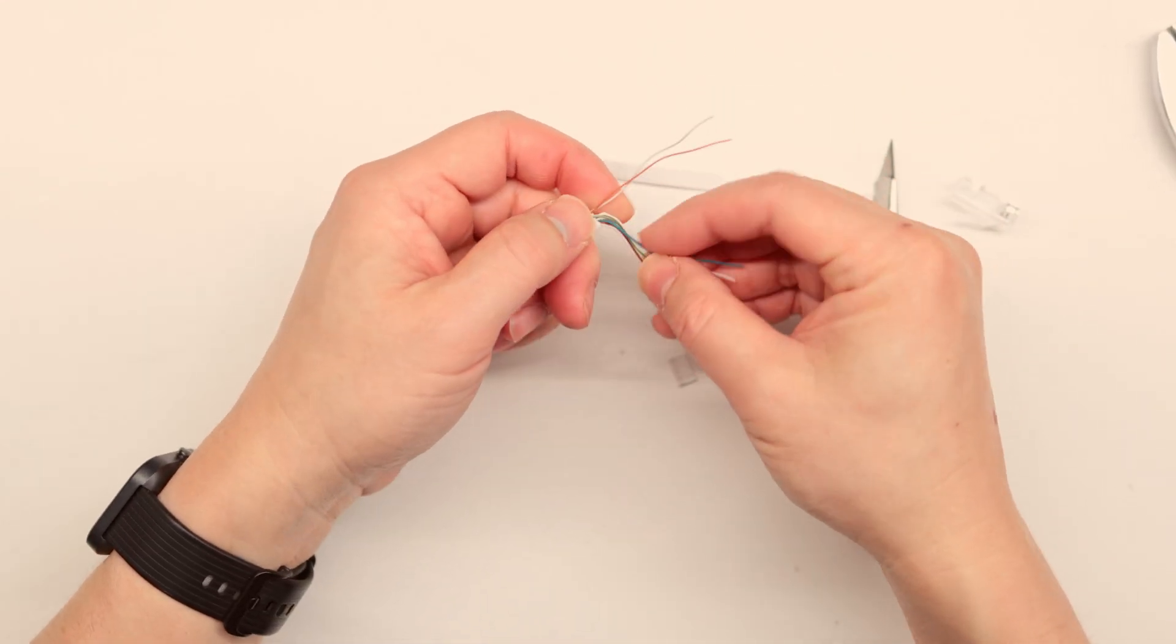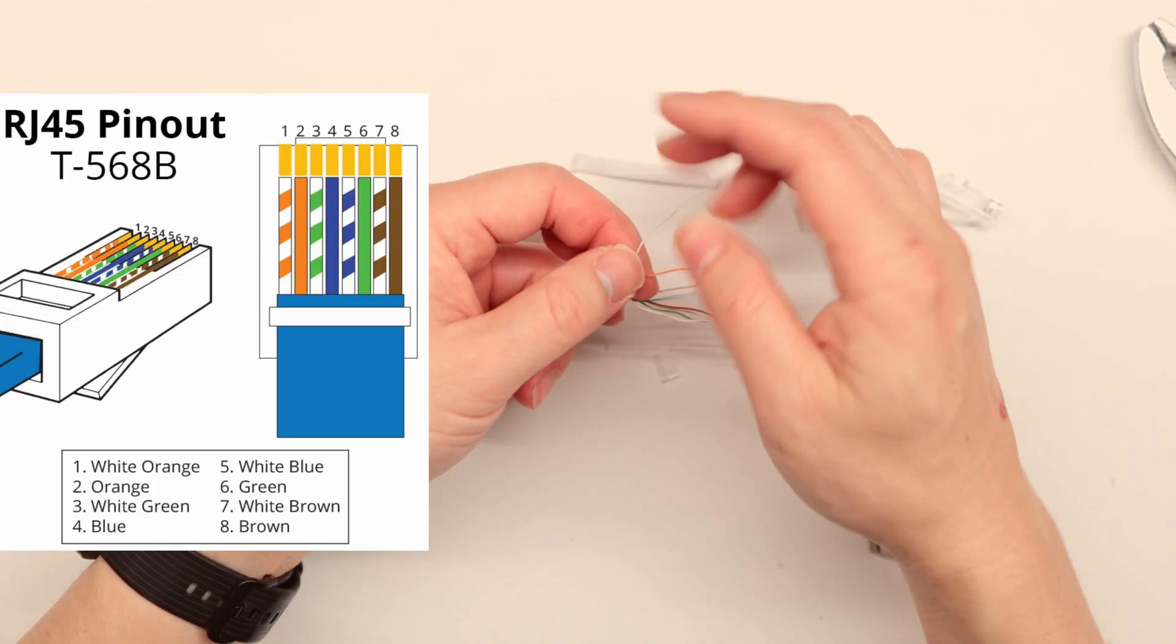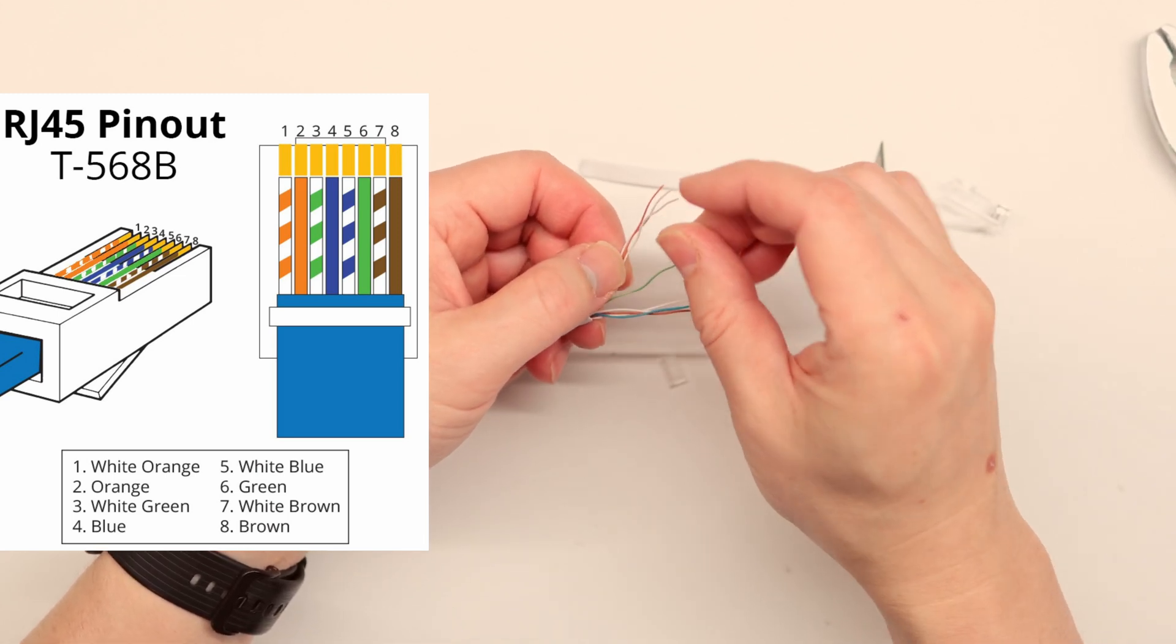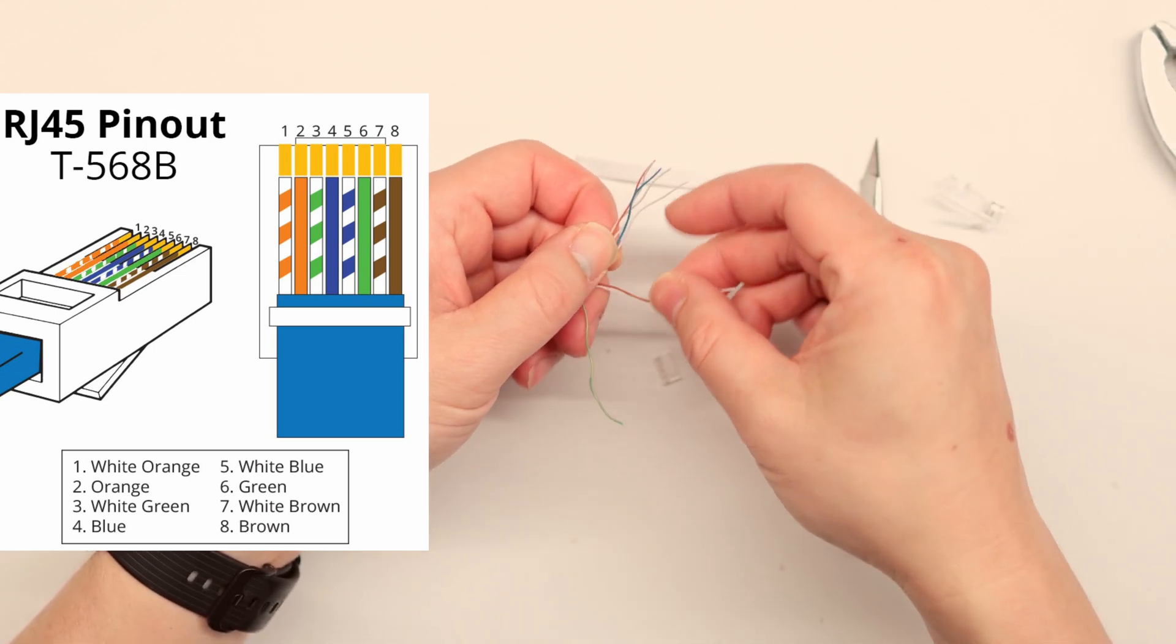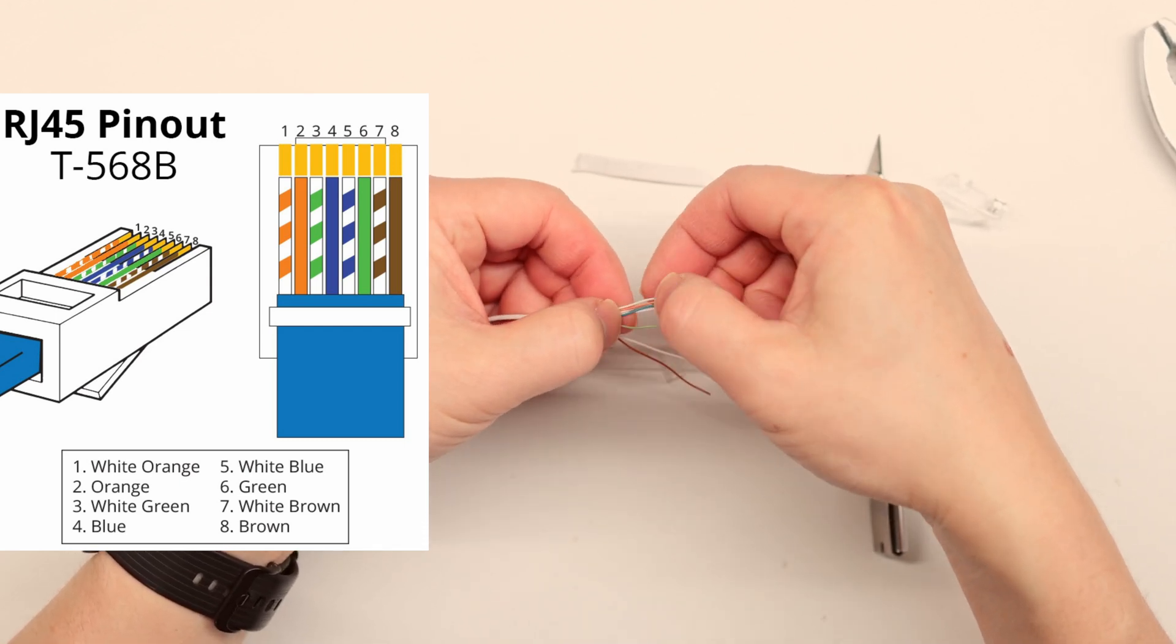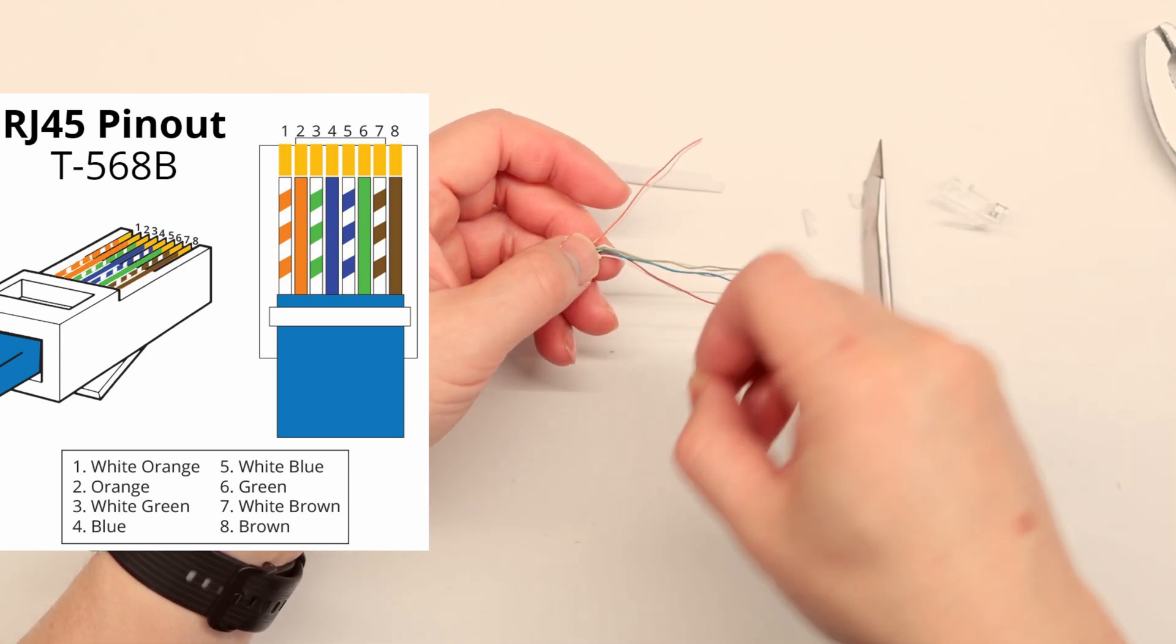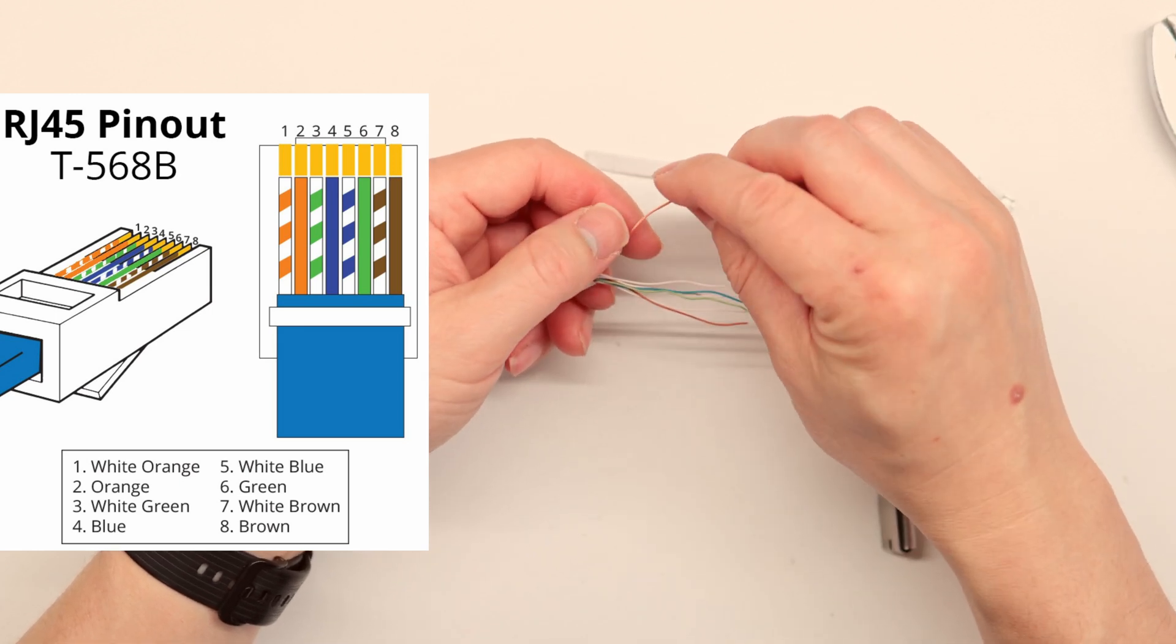We're going to use the B order, which is white-orange first, then orange, white-green, blue, white-blue, back to green. This can be very tricky, so I'm going to use the loading bar first and do it one at a time. Here we go, white-orange.